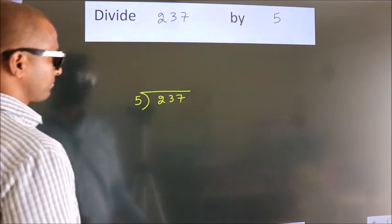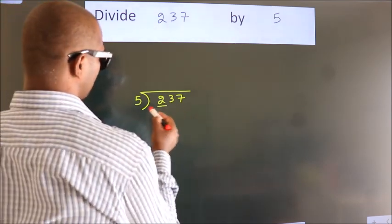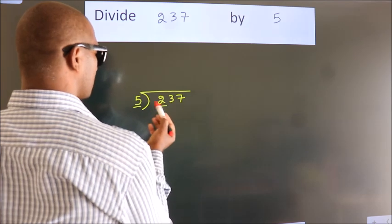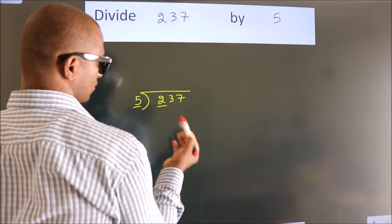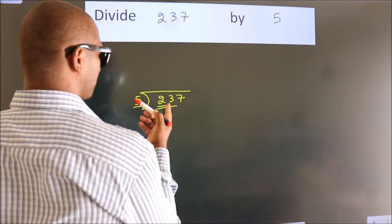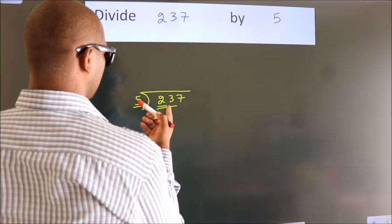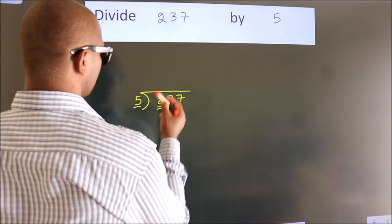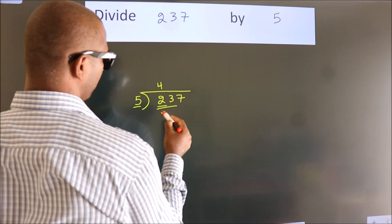Next, here we have 2. Here 5. 2 is smaller than 5, so we should take 2 numbers: 23. A number close to 23 in the 5 table is 5 fours, 20.